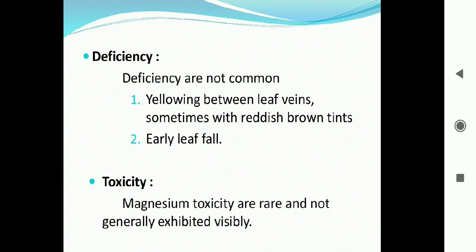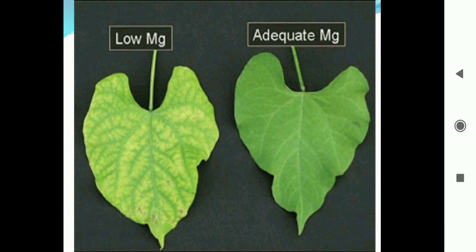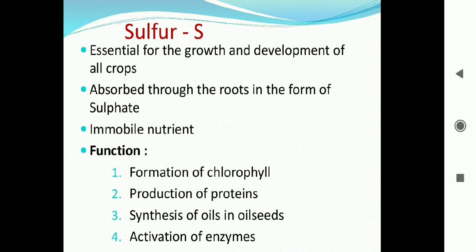Magnesium deficiency is not common in many plants, but when deficient it shows yellowing between leaf veins, sometimes with reddish-brown tints on the leaf surface and early leaf fall. Toxicity is also very rare. In images, low magnesium content shows a yellow region in the interveinal parts of the leaf, caused by lower chlorophyll synthesis.